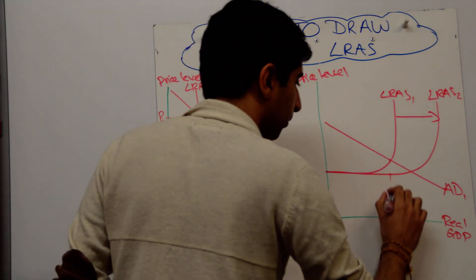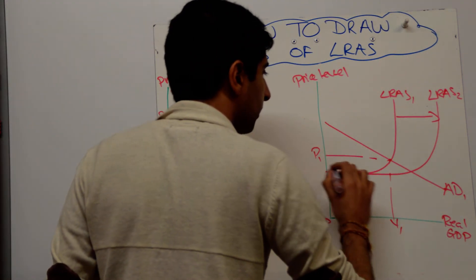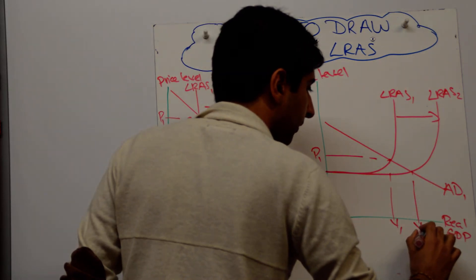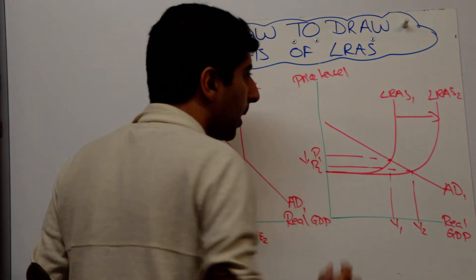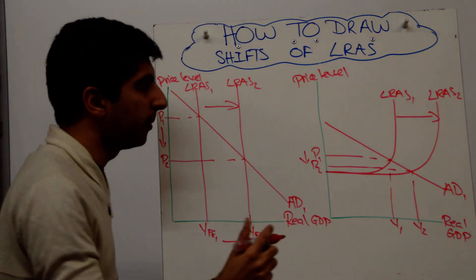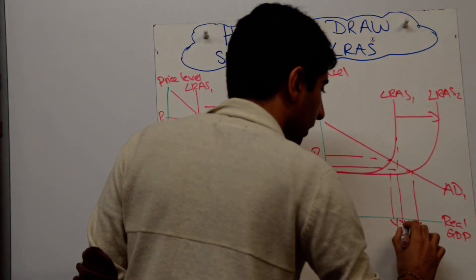And now get your equilibriums drawn. So initial equilibrium is at y1 and p1. New equilibrium is at y2 and p2. That's fine.